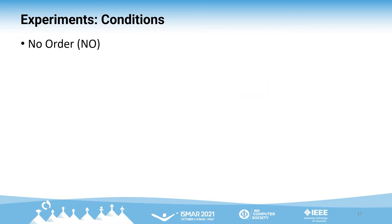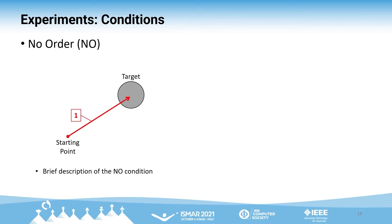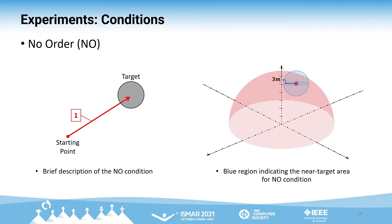We also designed a one-step directional guidance called the NO condition to compare with the first two conditions. In this condition, there is no certain order when finding the target objects. The beeping interval decreases as the laser raycast gets closer to the exact 3D position of the target object. We set the blue region to indicate the target position in various directions so that users can recognize that the laser raycast is near the target.